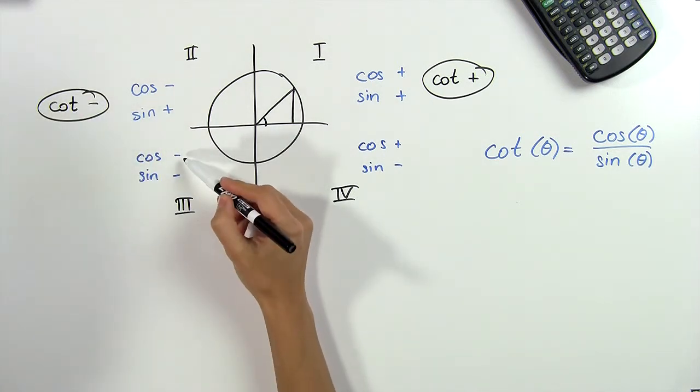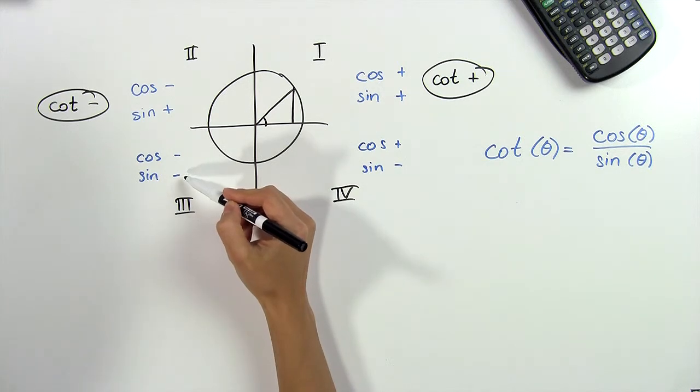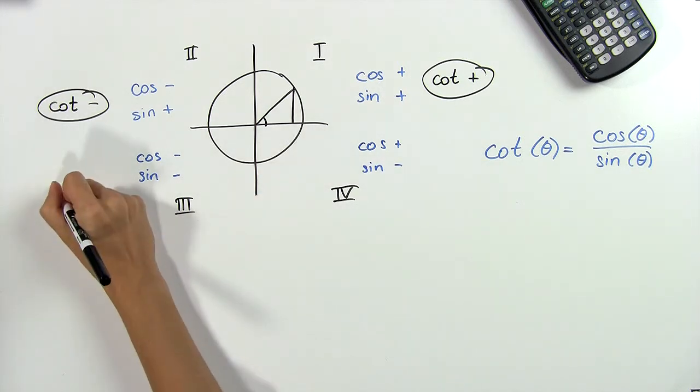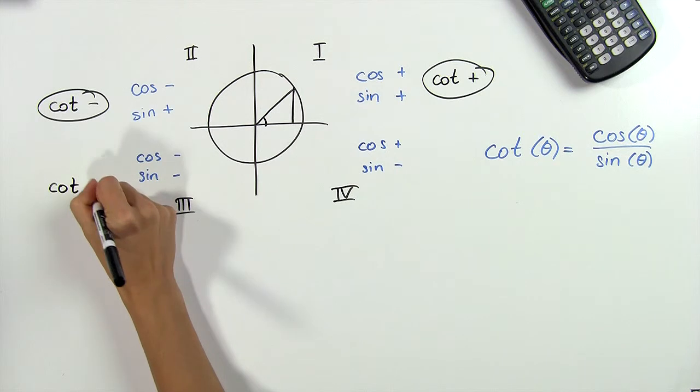In the third quadrant, we have a negative number divided by a negative, which always gives us a positive. So here, the cotangent is always positive.